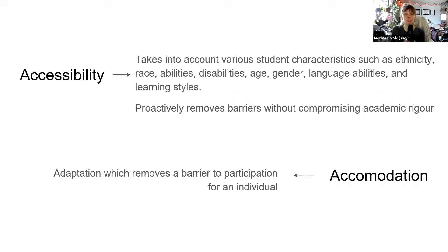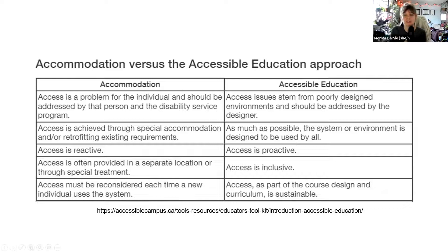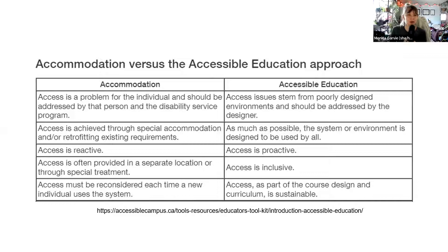Let's dive deeper into accessibility versus accommodation. Accessibility is proactive — it proactively removes barriers without compromising academic rigor or integrity. Accommodation is reactive — it's the adaptation which removes a barrier to participation of a specific individual. Accessibility views barriers as a systemic issue that needs to change, whereas accommodation treats it as an individual problem. The educator is responsible for removing systemic barriers and making things accessible, rather than treating it as the individual's issue requiring an accommodation.